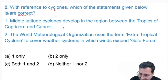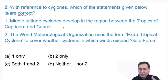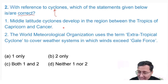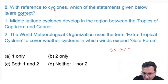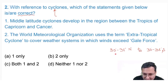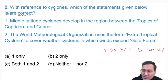Tropical cyclones are formed in the tropical and subtropical parts, in both the northern and southern hemispheres. Latitude-wise, that means from 30 to 35 degrees north down to 30 to 35 degrees south — that is the area within which tropical cyclones occur.